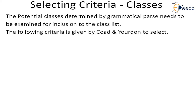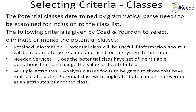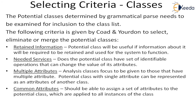Once we have determined the potential classes, we have to check whether they are actually to be selected or not. Not everything in the potential class list will be the final class — we may have to eliminate, change, or merge. Some criteria given by Coad and Yourdon are used to select or eliminate or merge the potential classes to arrive at the final classes.